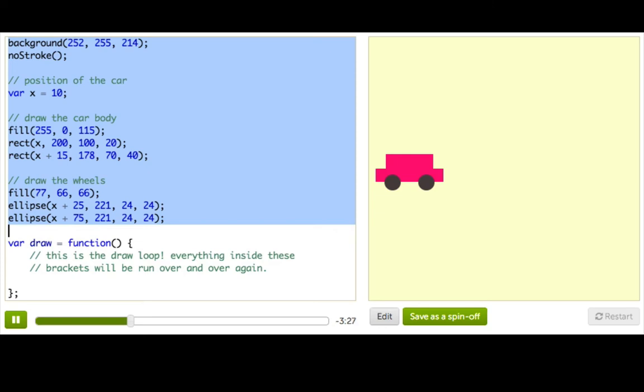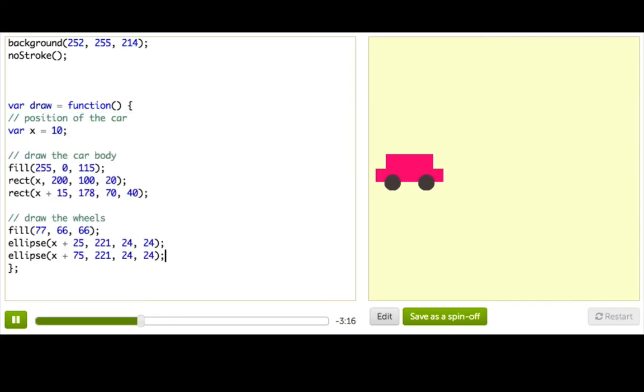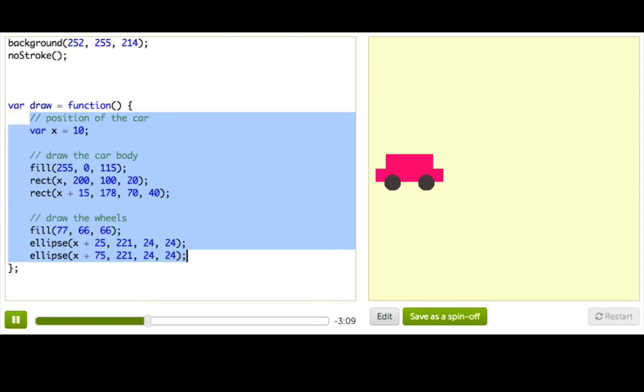So the first step in animating is to move all your drawing code into the brackets so that your picture will get drawn over and over. So let's do that. I'm just going to pull all this drawing code, and then plop it down inside my loop. And to remind myself that this block of code goes inside these brackets, I'm just going to indent it all by selecting everything and pressing tab.